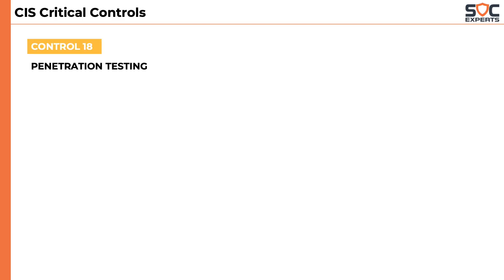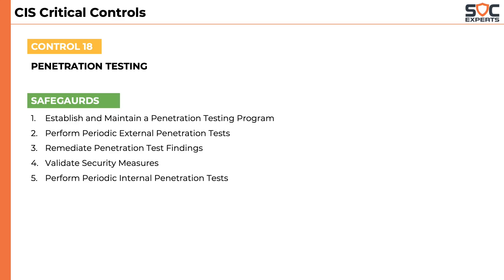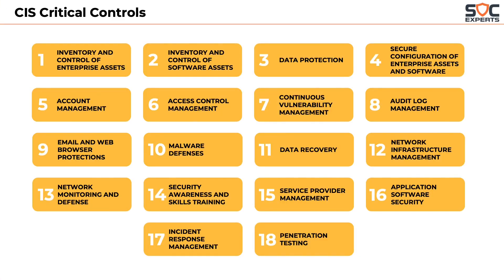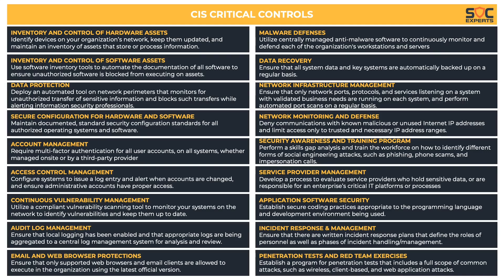The eighteenth and final control talks about penetration testing. It has five safeguards that highlight establishing a pen-test program, performing periodic external penetration testings, remediating identified vulnerabilities, and validating security measures. In order to refer back quickly for revision, the following two images are added to the course notes.